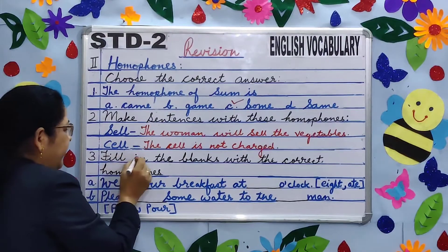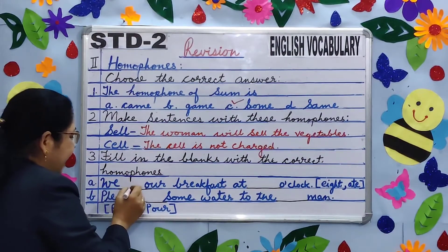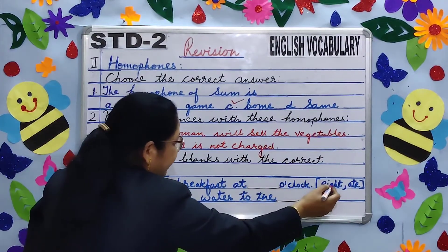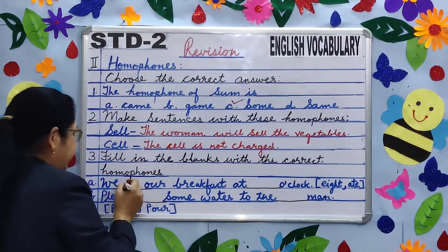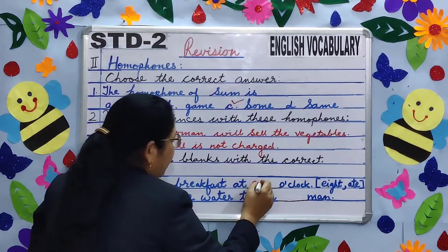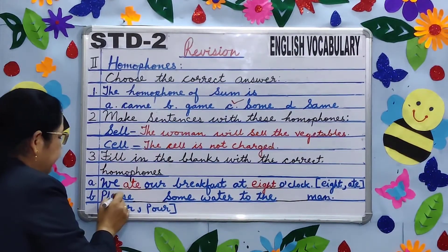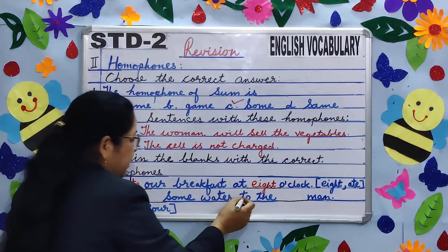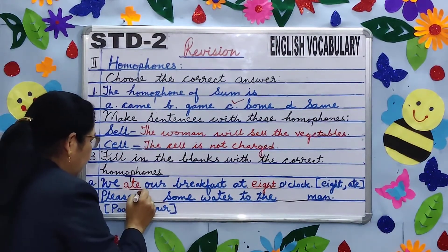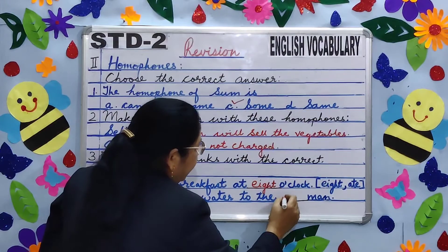Number three — fill in the blanks with the correct homophones. A. We ate our breakfast at eight o'clock — 'ate' (A-T-E) and 'eight' (E-I-G-H-T). B. Please pour some water to the poor man — 'pour' (P-O-U-R) and 'poor' (P-O-O-R).